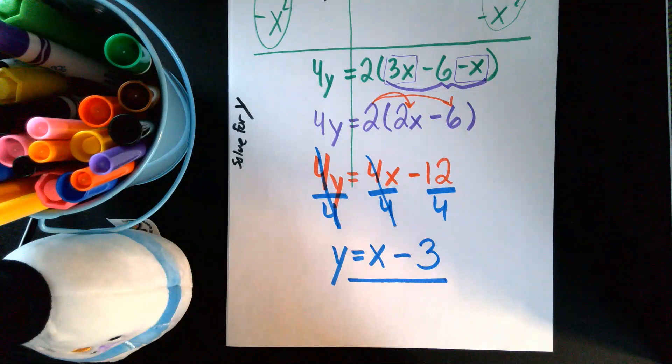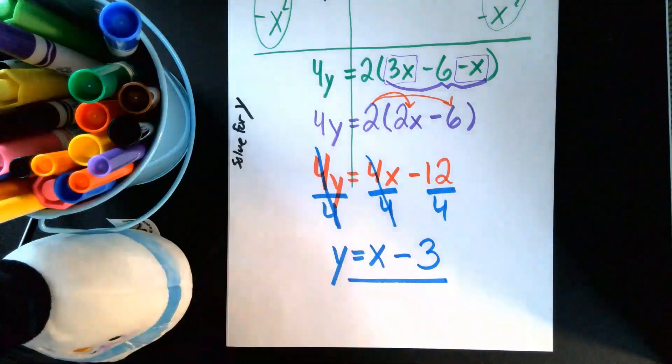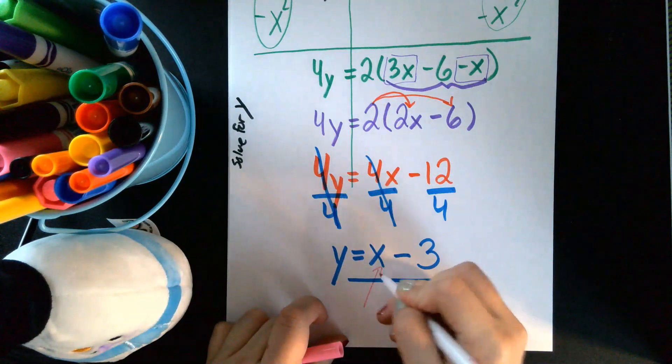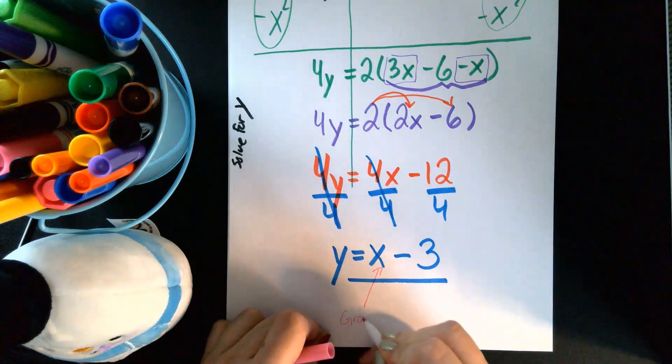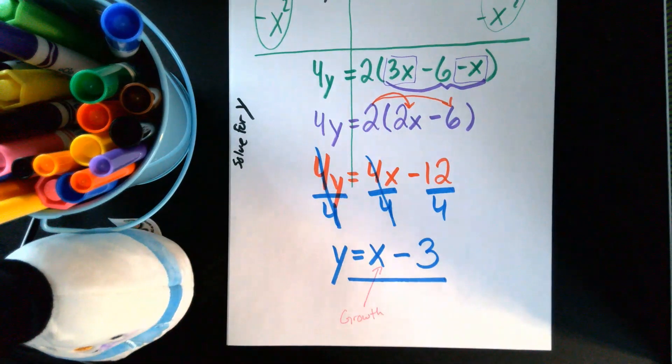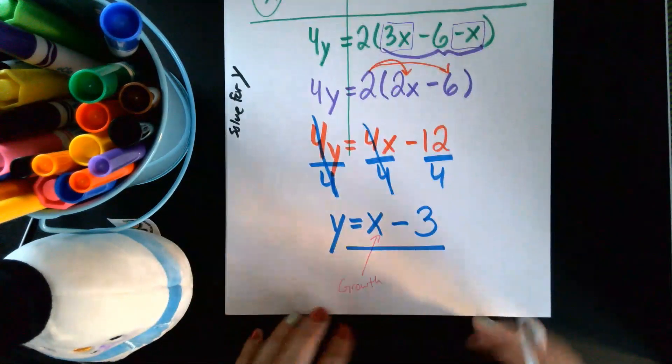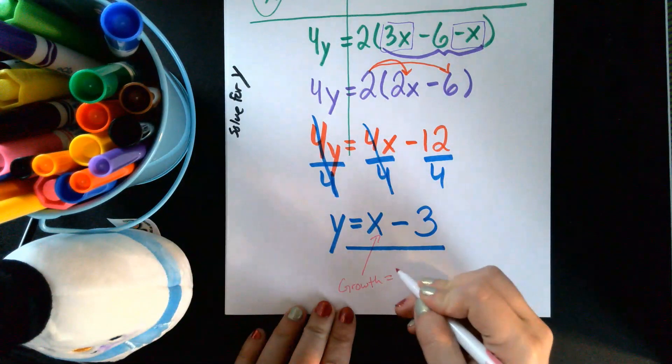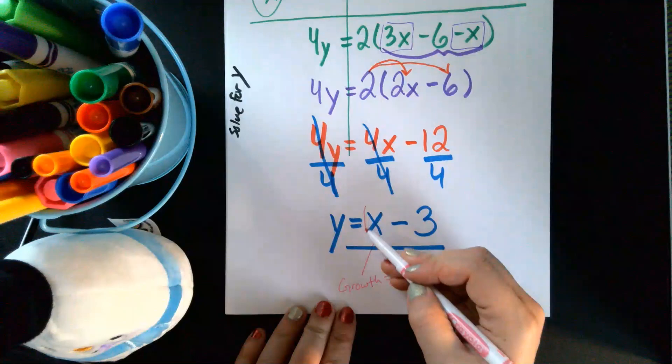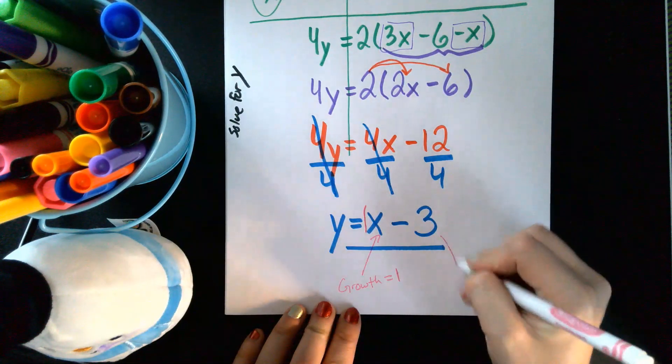And then if we go through and we looked at the growth on this, the growth is equal to one because there is this invisible one next to the x here. And the growth here is our growth, sorry the beginning, so the y-intercept is at negative three.